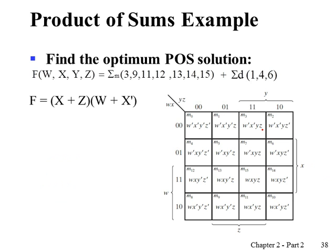Remember, we have two standard forms. One is the sum of products, which we have used so far as a target of the simplified solution. Another standard form is product of sums. If product of sums is the target of optimization, we do use the kmap but in slightly different ways. Let me explain that by example.